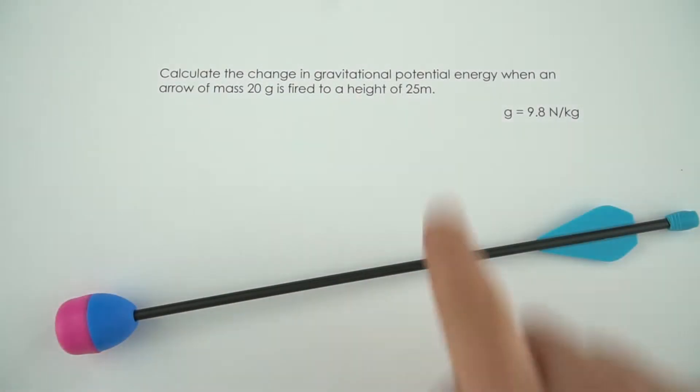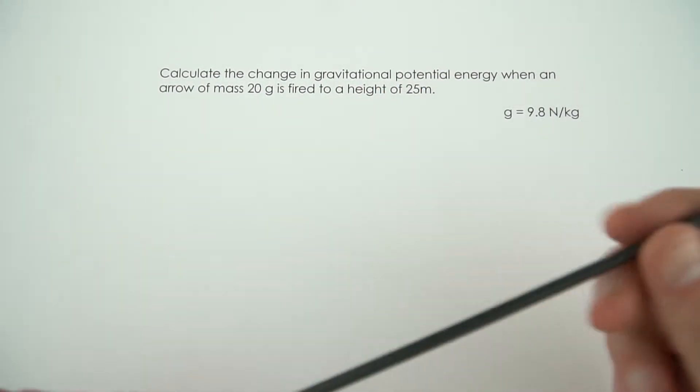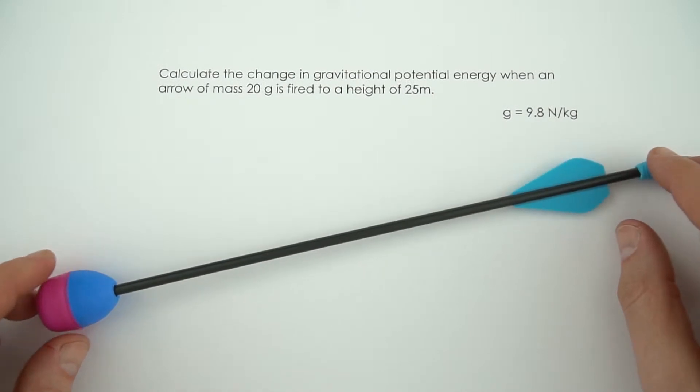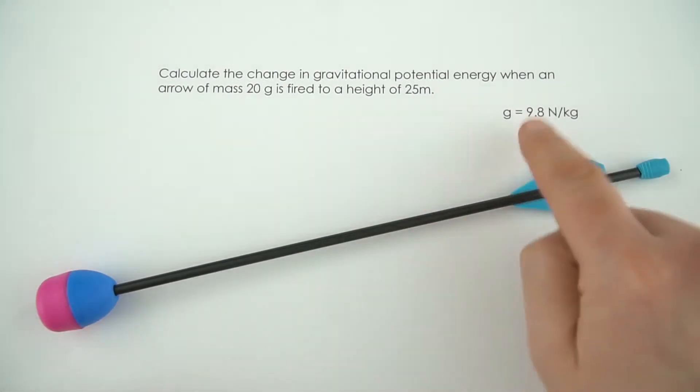So in this example we need to calculate the change in gravitational potential energy when an arrow of mass 20 grams, just something a bit like this, is fired to a height of 25 meters. And here the value of g is 9.8 newtons per kilogram.